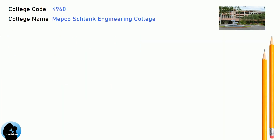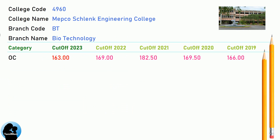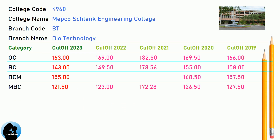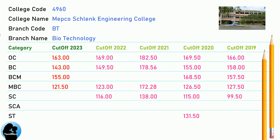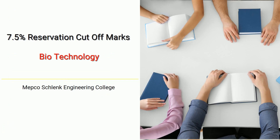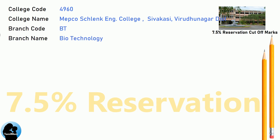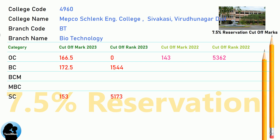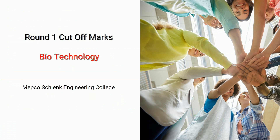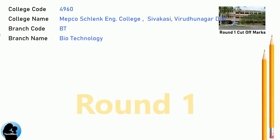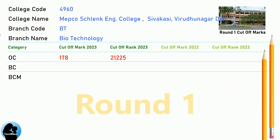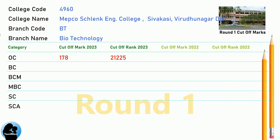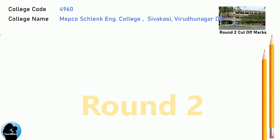Cut-off for Mepco Schlenk Engineering College in Biotechnology. 7.5 Reservation Cut-off, Round 1 Cut-off, and Round 2 Cut-off for Mepco Schlenk Engineering College in Biotechnology.